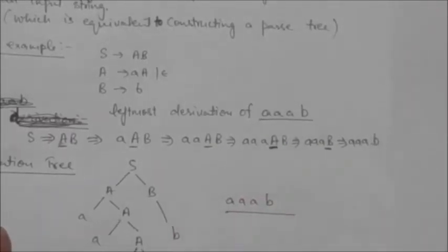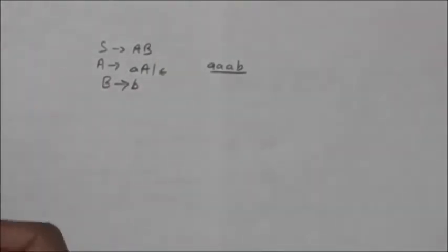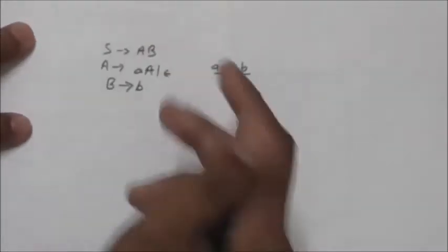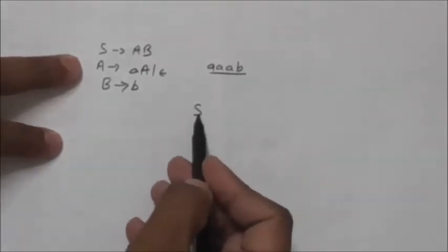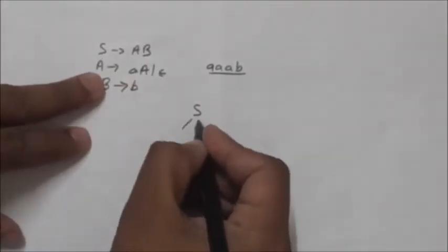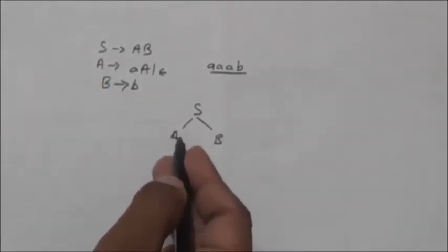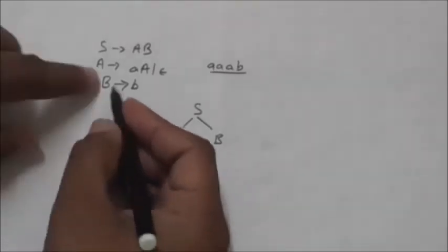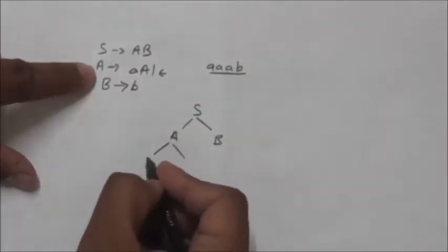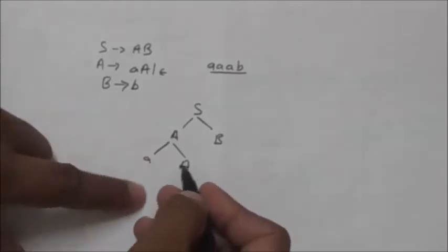This is the leftmost derivation of the string a a a b. Now we construct the derivation tree for this string using this grammar. Starting from start symbol S as the root node, we apply S derives aB, so the children of the root are A and B. The leftmost non-terminal is A, so we apply A derives aa, making a a the children of A. The leftmost non-terminal is again A, and we apply A derives aa, giving children a a.